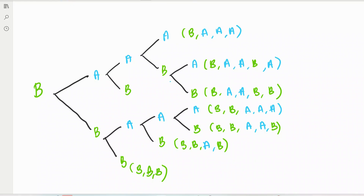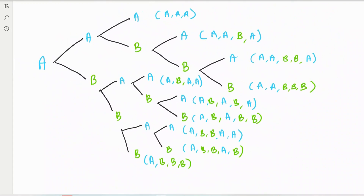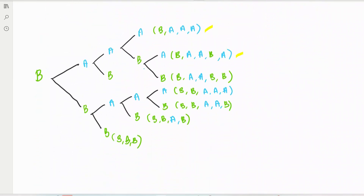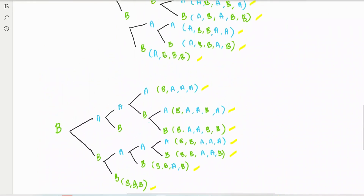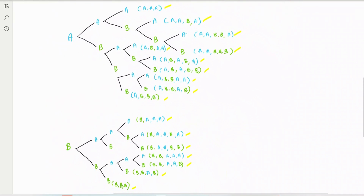Now we count all the outcomes. Counting through the tree diagram: 1, 2, 3, 4, 5, 6, 7, 8, 9, 10, 11, 12, 13, 14, 15, 16, 17 outcomes from the first half of the tree.